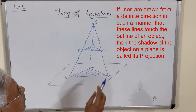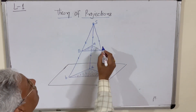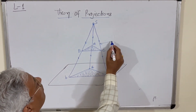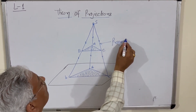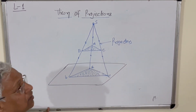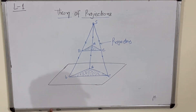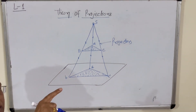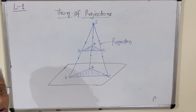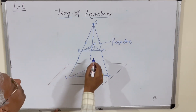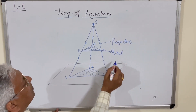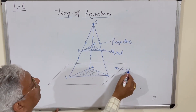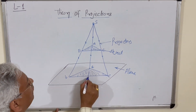The source of light is S, and these lines are called the projectors. Projectors are the lines drawn from the source of light to the object or to the plane of projection. This is the object, this is the plane, and this is the projection.